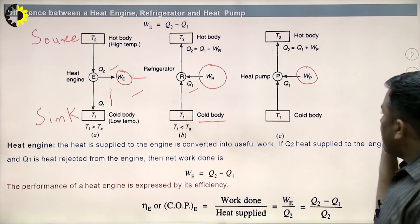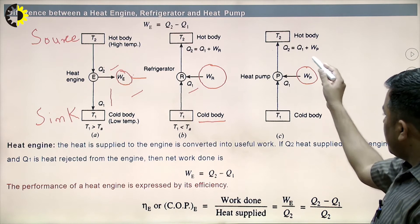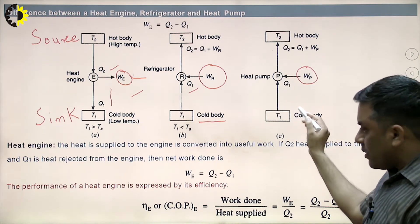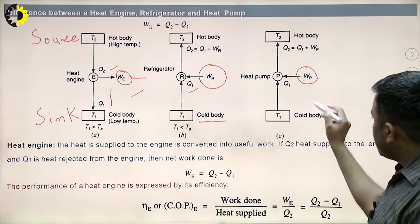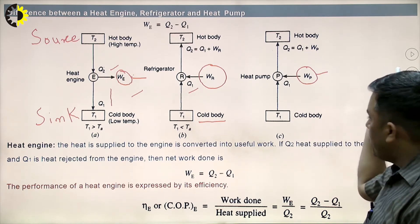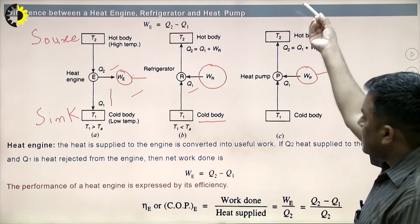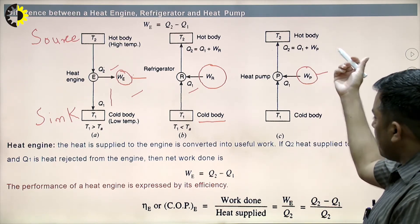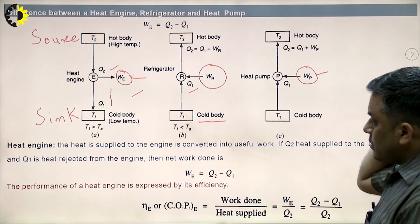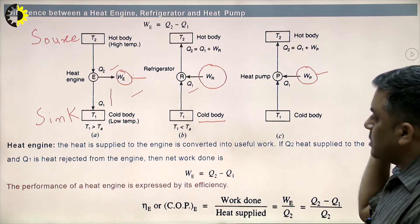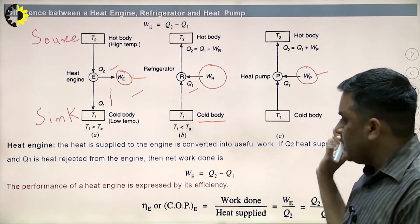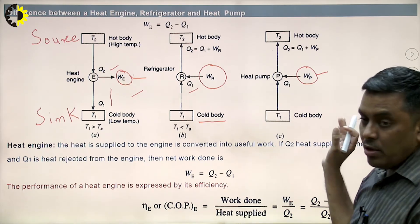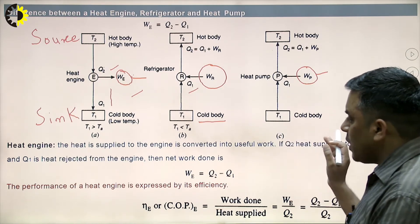The same process happens in case of a heat pump: heat is extracted from the low temperature body with the help of work input W_P, and then this heat is rejected to the high temperature thermal reservoir. Now we can understand what basically a heat engine, refrigerator, and heat pump are on the basis of the Kelvin-Planck and Clausius statements.